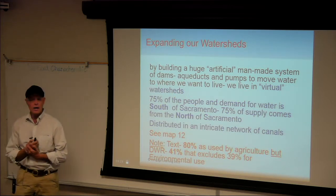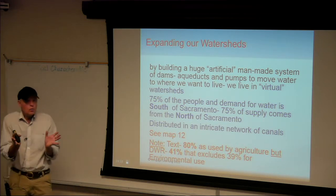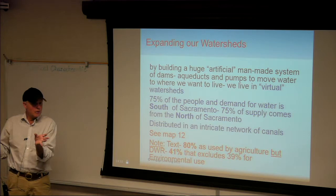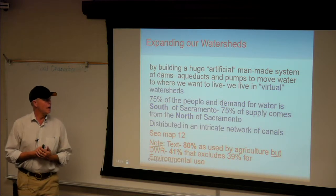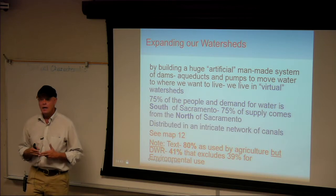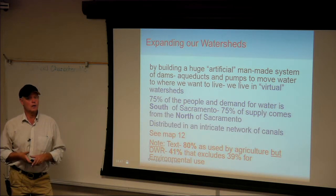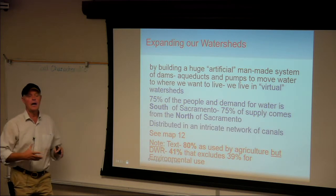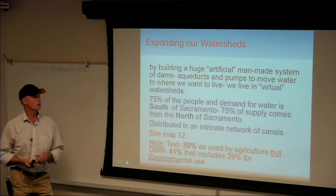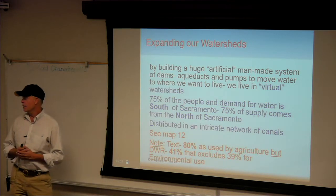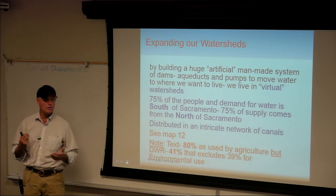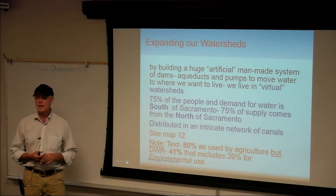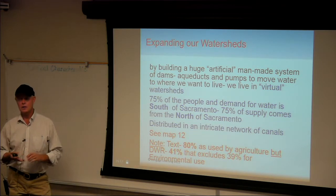Expanding our watersheds — how did we do this? LA and our area both have small natural watersheds that don't collect much rain, so we built artificial man-made systems: dams, aqueducts, and pumps — a virtual watershed. We were fortunate to tap into Northern California. 75% of the demand for water is south of Sacramento; 75% of the supply comes from north of Sacramento. It's distributed in an intricate system of canals, dams, and pumping. We use 17% of our electricity just to pump water.